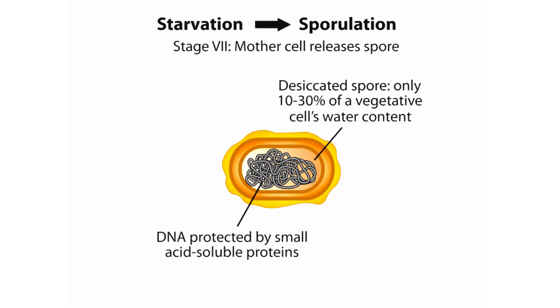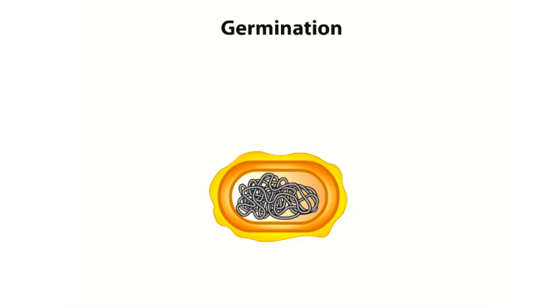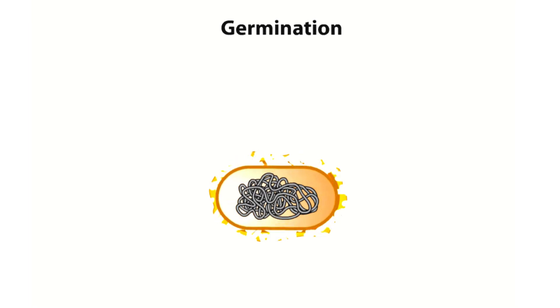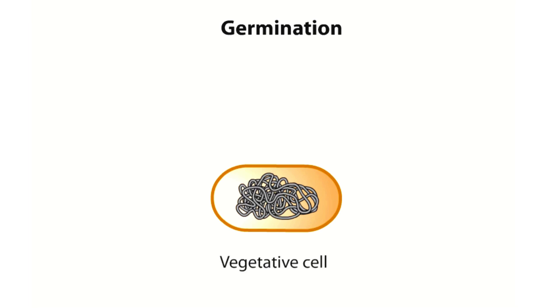Once proper nutrient conditions arise, another genetic program called germination is triggered to wake the dormant cell, dissolve the spore cortex and coat, and release a rehydrated, viable vegetative cell.